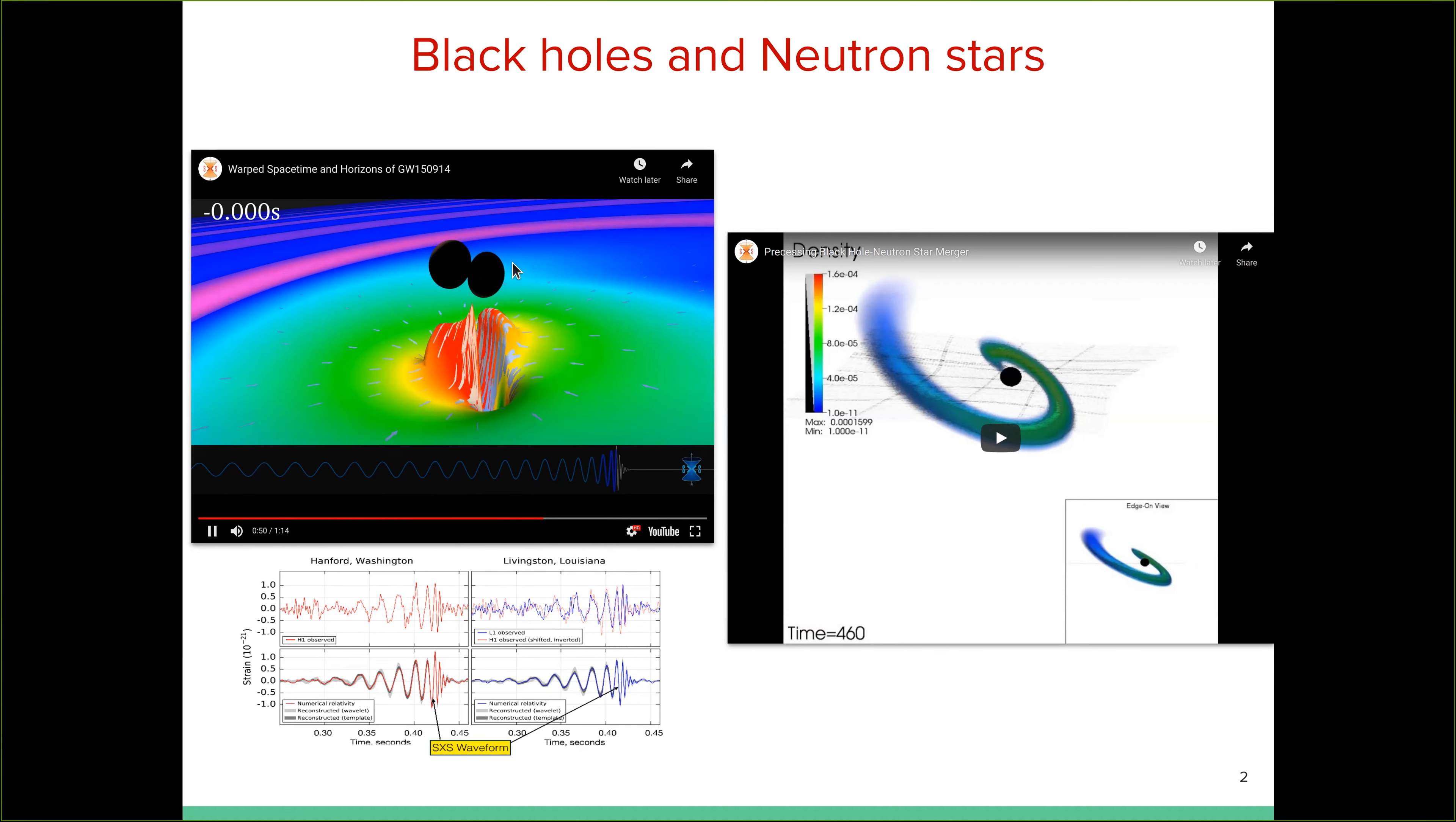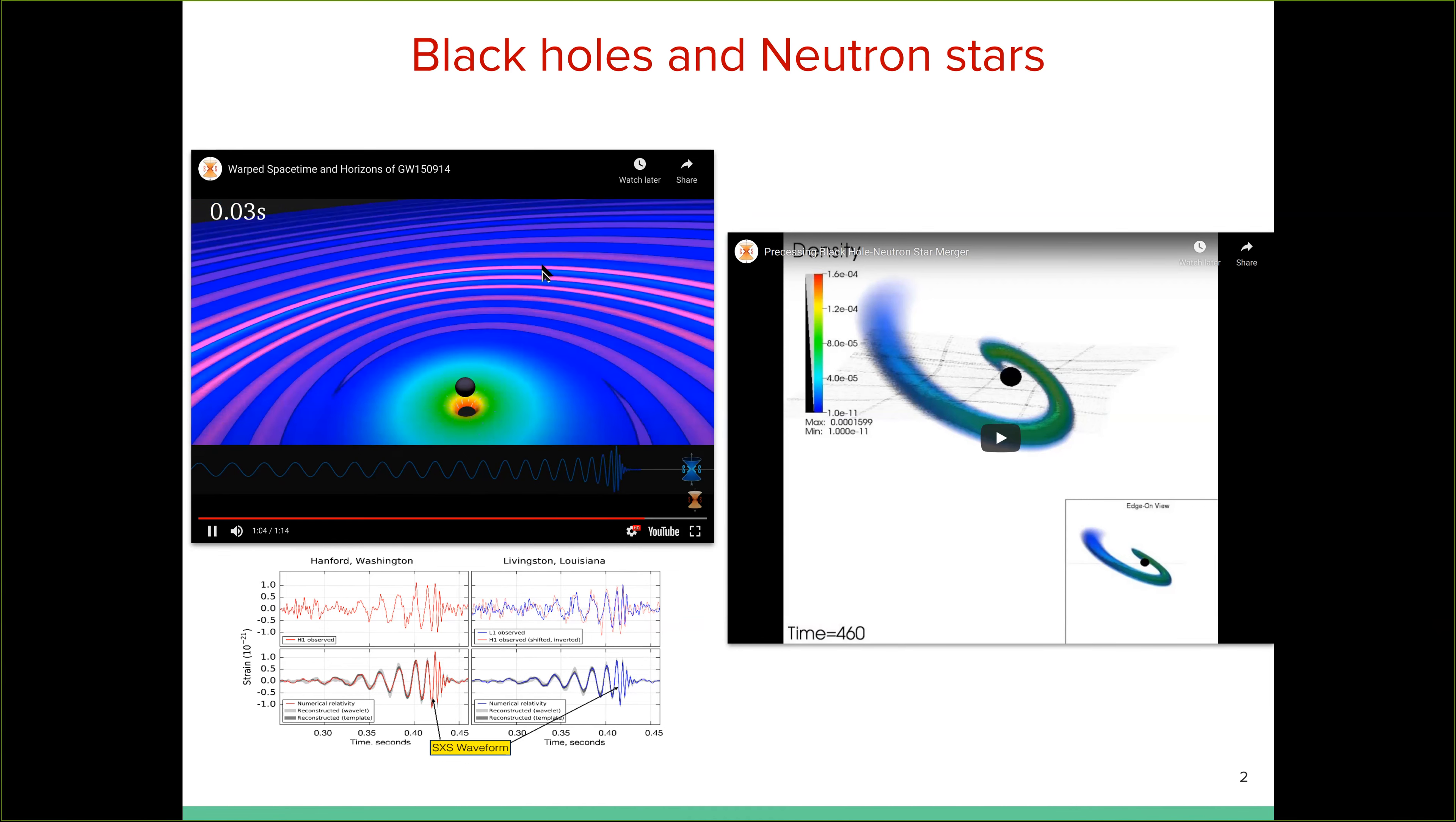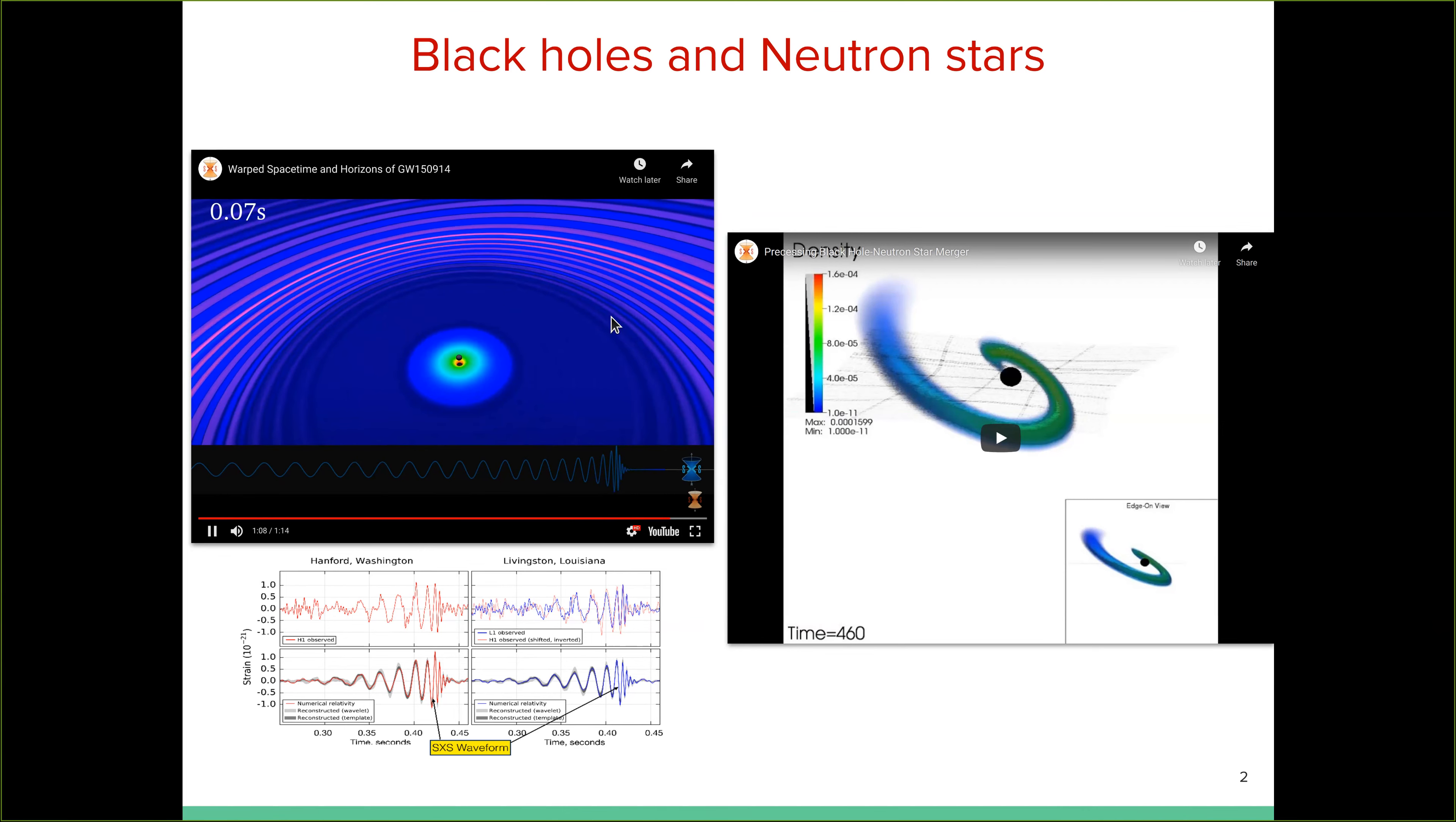And the two black objects here are the individual apparent horizons of the two black holes that are about to merge at this point. And the gravitational wave signal that is being emitted is being traced out at the bottom right here. So the movie slows down close to the point where the two black holes sort of collide.